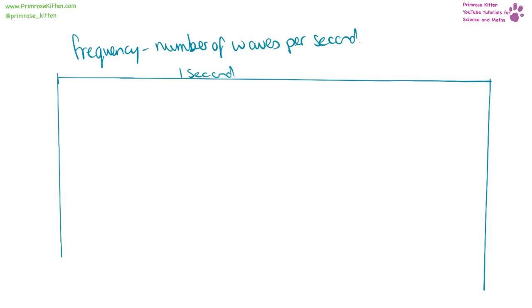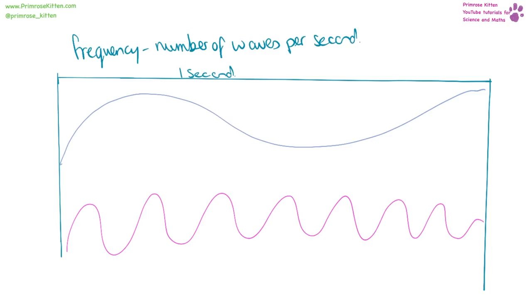Frequency is the number of waves per second. So, if we look at this block here as a second in time, something that will have a low frequency, we are not going to see many peaks in one second. But something that had a high frequency, we would see lots of peaks or lots of waves within one second.